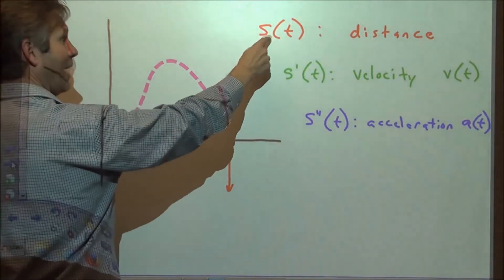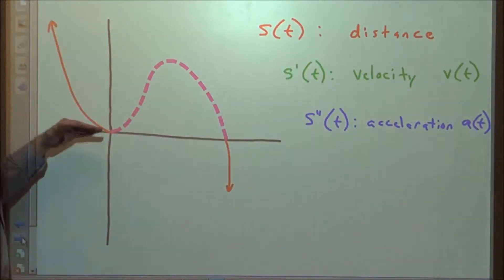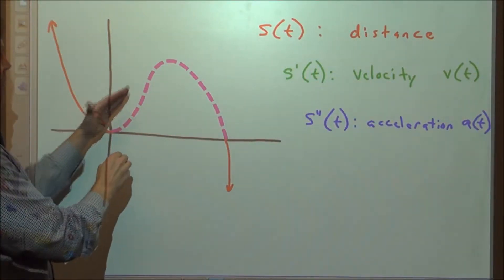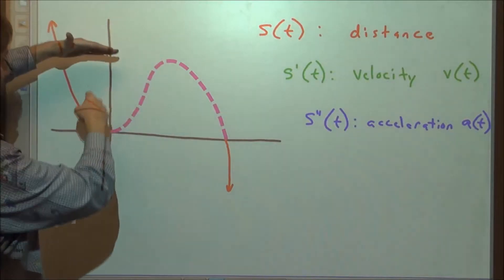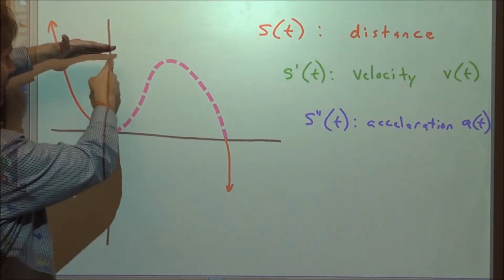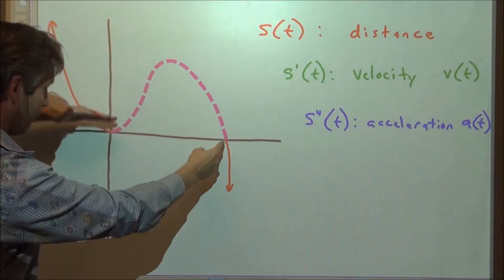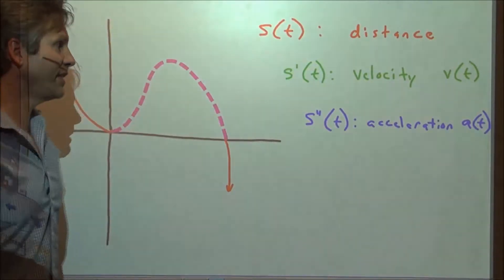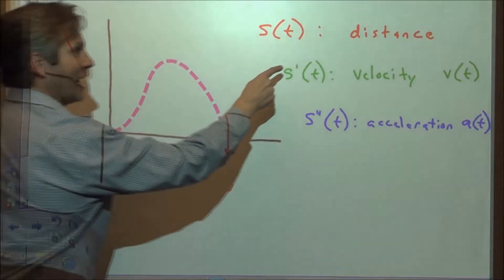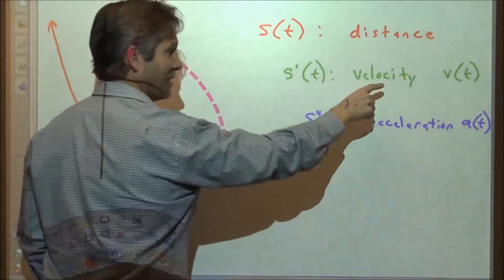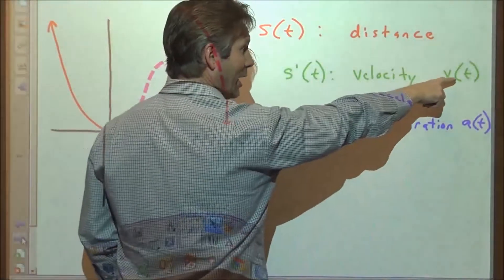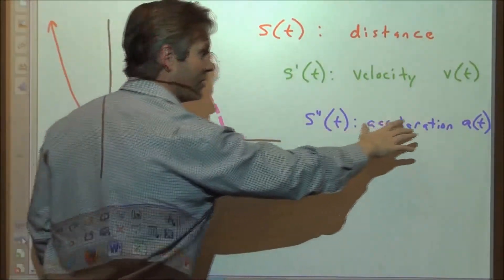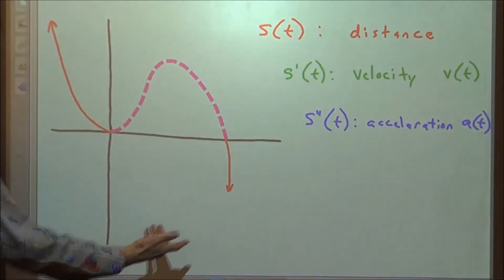So s(t) is distance — how far the car is away from the starting point. It gets 300 feet away, then comes back to zero — back to the starting point. The original function is distance. The first derivative is velocity, written as v(t). And the second derivative is acceleration, written as a(t).